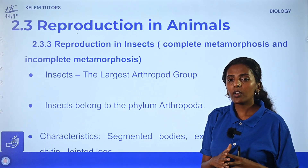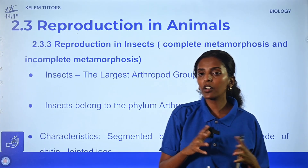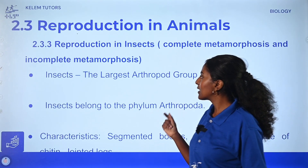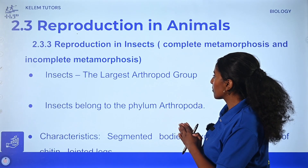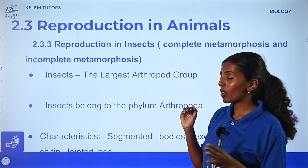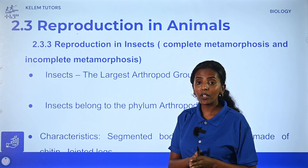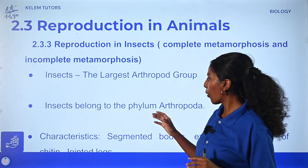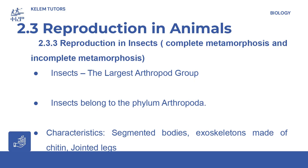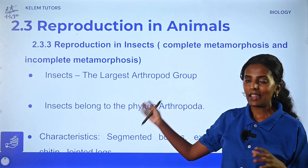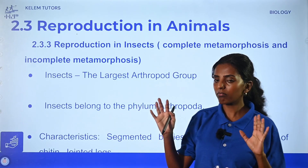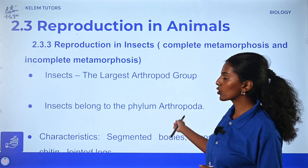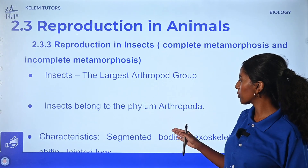Now we look at reproduction in different groups of animals. The first group is insects. Insects are invertebrates. They undergo a type of development known as metamorphosis, which is a complete change. Insects are the largest arthropod group — arthropods are a phylum. They have defining characteristics: a segmented body, exoskeletons made of chitin, legs, and wings.